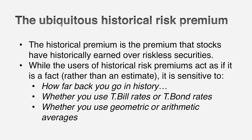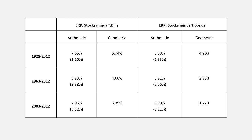That should be pretty simple, especially in the US where we have a long history. Take a look at the table — you'll see three slices of history: one going back to 1928 (85 years), one going back 50 years, and one going back 10 years. I get very different estimates of the risk premium depending on how far back I go. Whether I use T-bills or T-bonds as my risk-free investment, and whether I compute arithmetic averages — adding up 85 numbers and dividing by 85 — or geometric averages that account for compounding over time, my equity risk premium could range from around 1% to 7.5%. All these numbers can't be right at the same time.